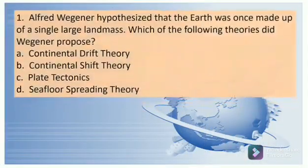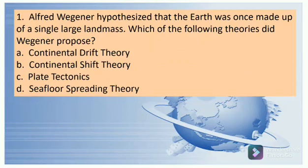Question 1: Alfred Wegener hypothesized that the Earth was once made up of a single large landmass. Which of the following theories did Wegener propose? If your answer is letter A, that is correct.